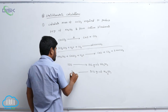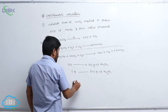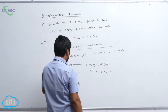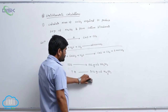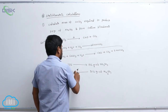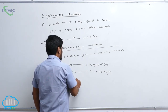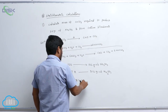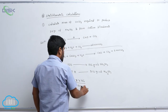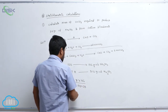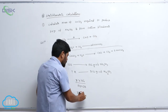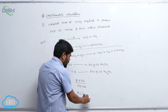Assume the mass of calcium carbonate is x. Then: x equals (106 / 100) × 212 — wait, rearranging: x × 106 / 100 = 212, so x equals 200 grams.